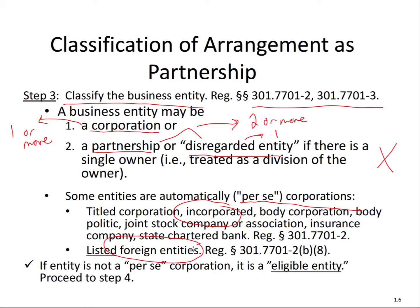If the entity is not a per se corporation, it's considered an eligible entity, and that's where we get into the check-the-box regulations. In step three you classify the business entity: if you're a per se corporation, you can only be a corporation. But if you're not considered a corporation, that's where you can start getting to choose — we call that the check-the-box regs.